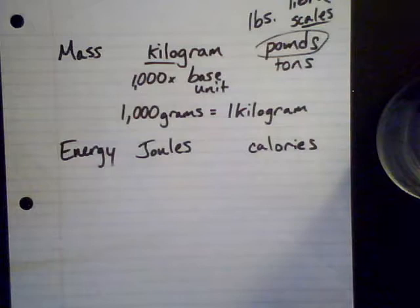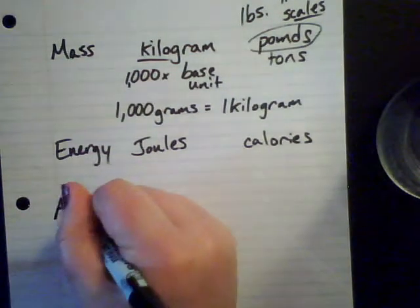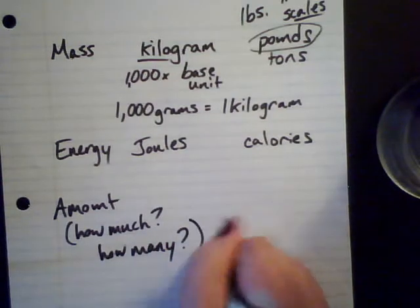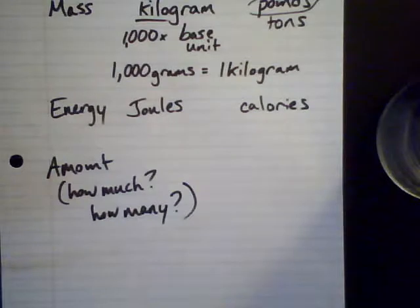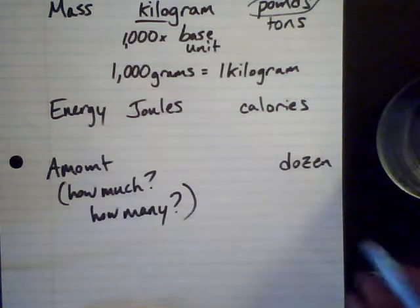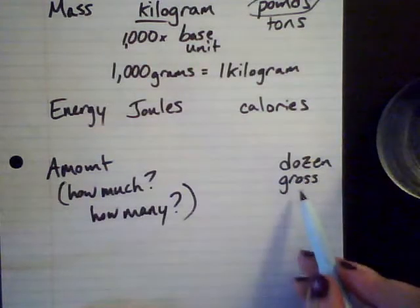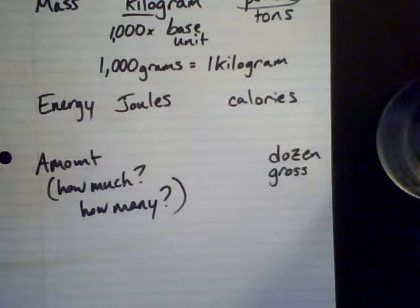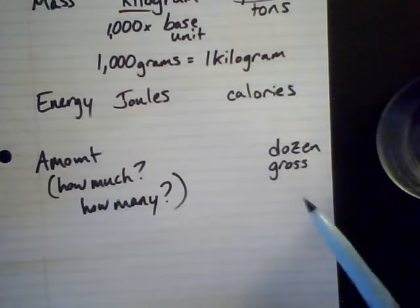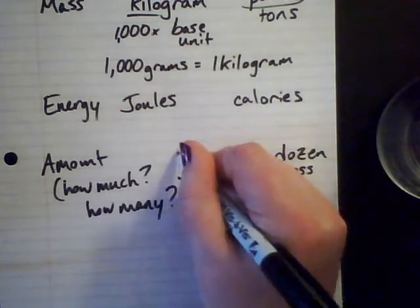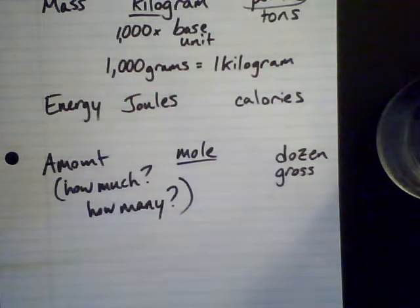The last thing to introduce is the amount of something — how much or how many. In the U.S. customary system we use the dozen (12 of something) or a gross (144 of something), because we don't want to count individual items. When talking about atoms, we need something much larger, and we use what's called the mole. The mole is our SI unit for talking about how much or how many, and we'll cover it in more detail later.